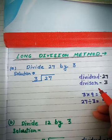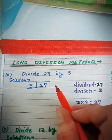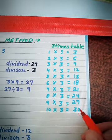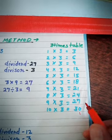So, recall the 3 times table until you get the number of 27 or a number less than 27. Stop here.